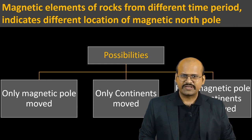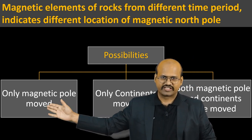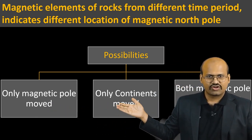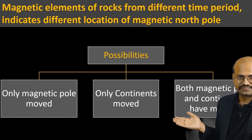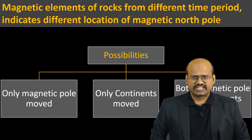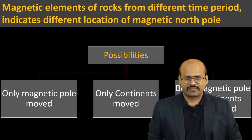Since magnetic elements of rocks from different time periods indicate towards different locations of the magnetic north pole, this leads to three possibilities: first, only the poles have moved; second, only the continents have moved; and third, that both have moved. Things got interesting when rock samples from other continents were studied. When rocks of the current time period were taken from different continents — North America and Africa — the magnetic elements from both continents pointed towards the current magnetic pole.